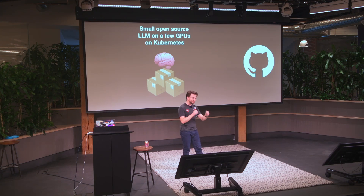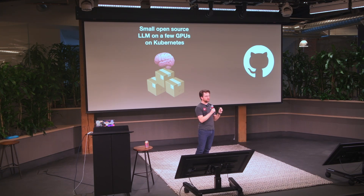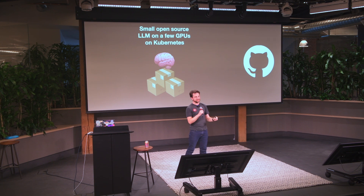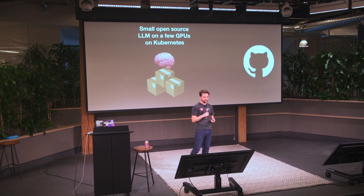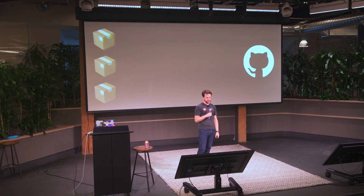This is really interesting. This is where we got all those cost savings. This is where we brought down that OpenAI bill — by actually running a large language model, an open source large language model on a few GPUs on Kubernetes. Let's dive into what that is.